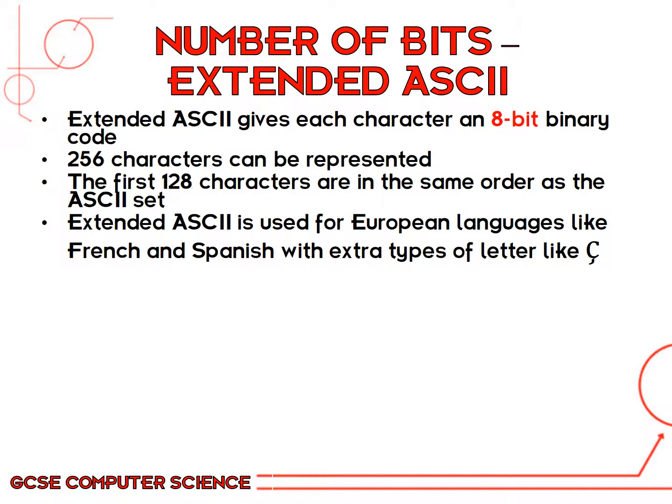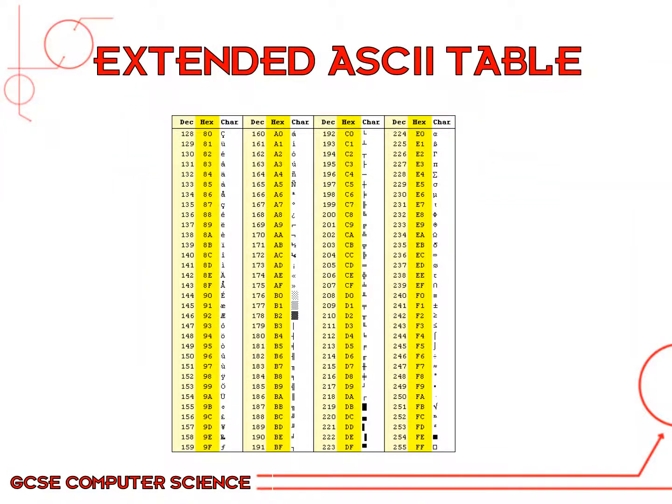The ASCII character set is great if you're English or American — we can use all of the letters we want without any problems. However, if you study GCSE French or Spanish, you might need to type up essays using characters that aren't in the English alphabet. Therefore, we have something called the extended ASCII character set, used for European languages like French and Spanish. This requires the full eight bits — not just seven like before where we only had 128 characters. Using the full eight bits within the byte means the first bit could be a zero or a one depending on which character you want to display. This extended ASCII table shows some of the other characters you might use in other languages.